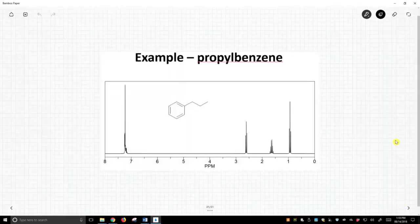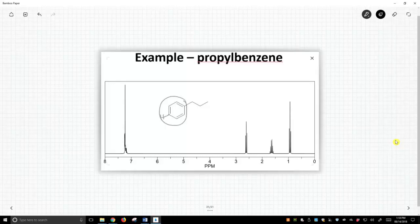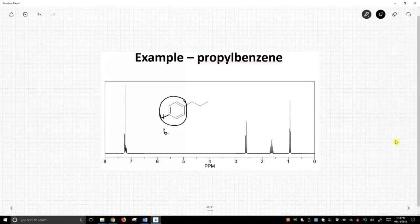Here's propylbenzene. The benzene ring, all of these hydrogens on the benzene ring, they show up in the six and a half to eight window, and they all lump together here. They don't have a distinct multiplicity. Not all hydrogens show pretty multiplicities. But we have this CH3, we have this CH2, we have this CH2.